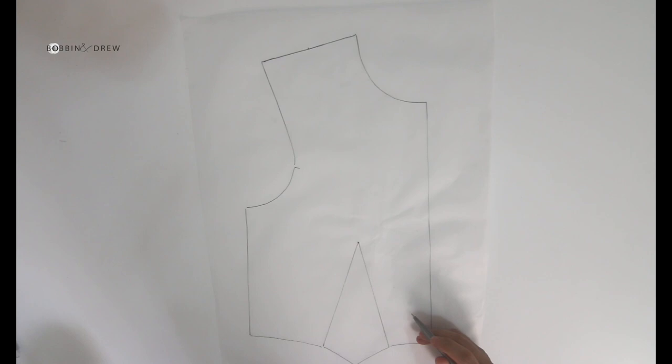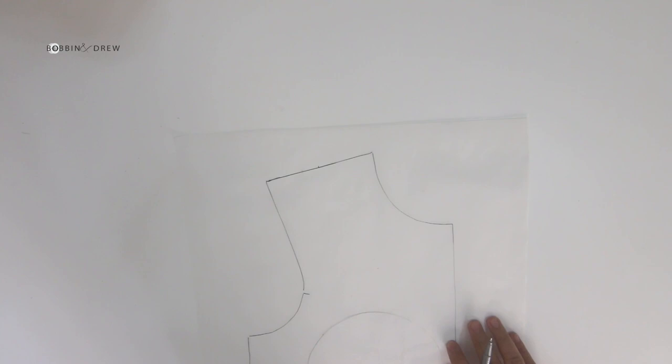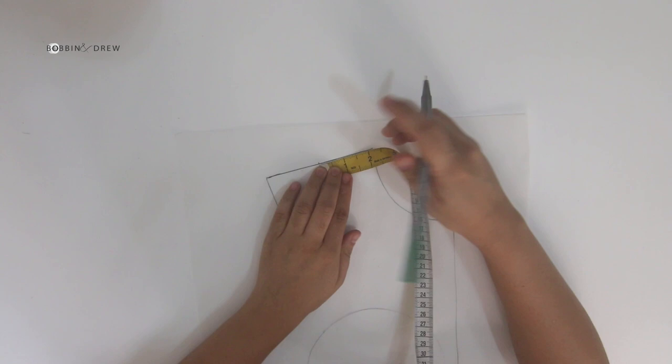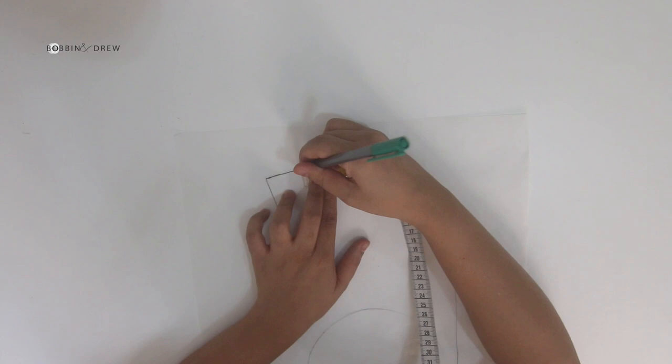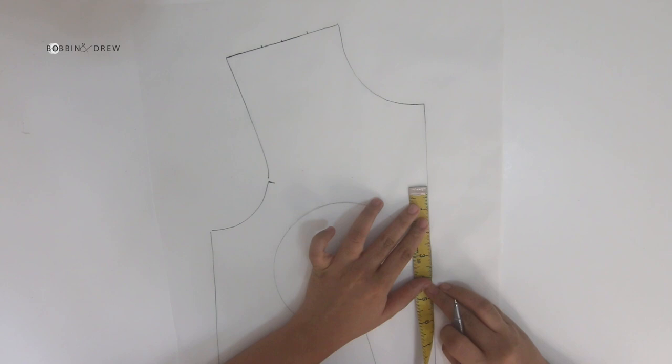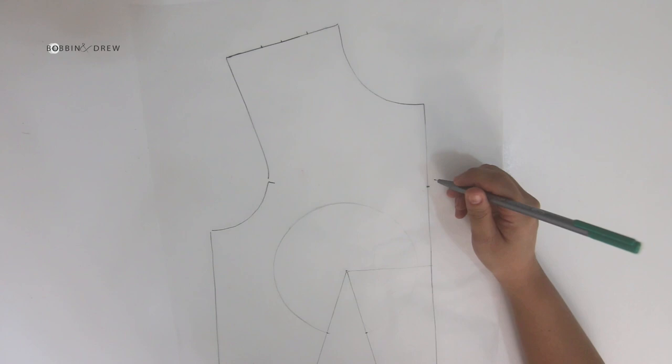Mark 3 inches from the bust point and draw a bust circle using a compass. Decide on the width of the shoulder strap, and here I've used 1 and 3/4 of an inch. Next is to decide on the neckline placement. Then use a French curve to draw the neckline and the armhole.